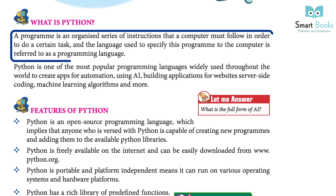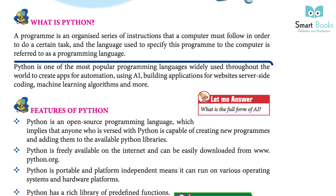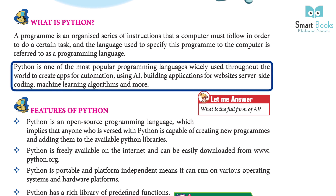What is Python? A program is an organized series of instructions that a computer must follow in order to do a certain task, and the language used to specify this program to the computer is referred to as a programming language. Python is one of the most popular programming languages, widely used throughout the world to create apps for automation, using AI, building applications for websites, server-side coding, machine learning algorithms, and more.